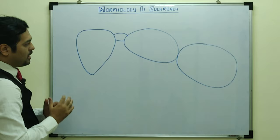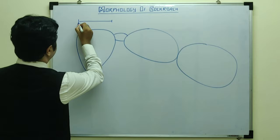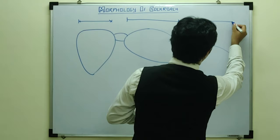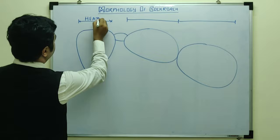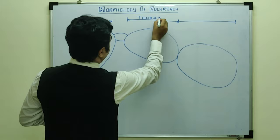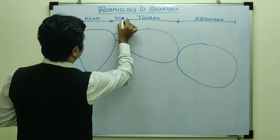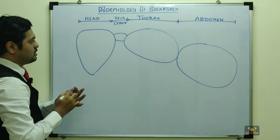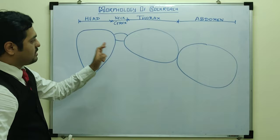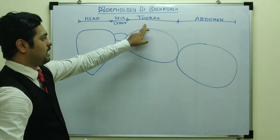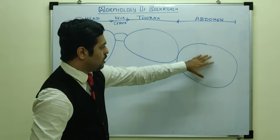So the first region is the head, the second region is the thorax, and the third region is the abdomen. Head and thorax are connected by a movable neck also known as the cervix. Head and thorax are attached at right angles to each other because of this movable neck. Out of the three major parts, abdomen is the largest part of the entire body.